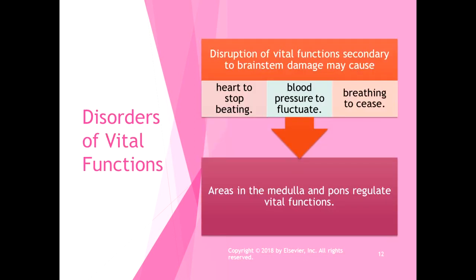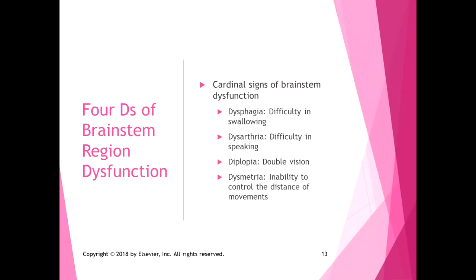Disruption of vital functions from secondary brainstem damage can cause the heart to stop beating, blood pressure to fluctuate uncontrollably, and breathing to cease. Areas in the medulla and pons regulate these vital functions, and damage there can be life-threatening. The four D's of brainstem dysfunction are: dysphagia (difficulty swallowing), dysarthria (difficulty speaking), diplopia (double vision), and dysmetria (inability to control the distance of movements). You should memorize these.